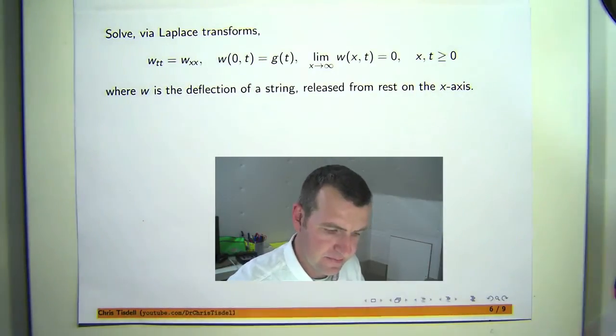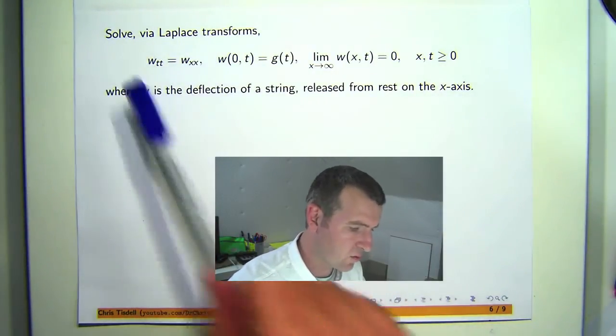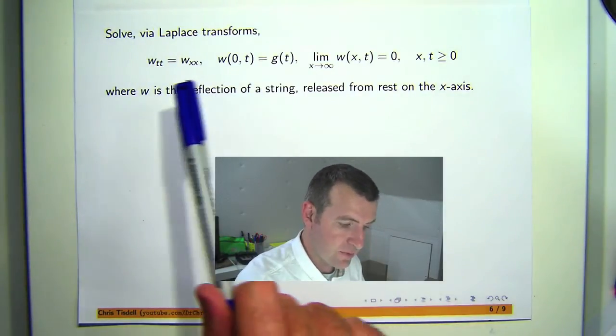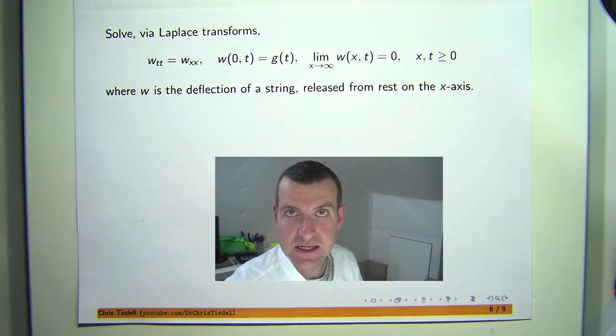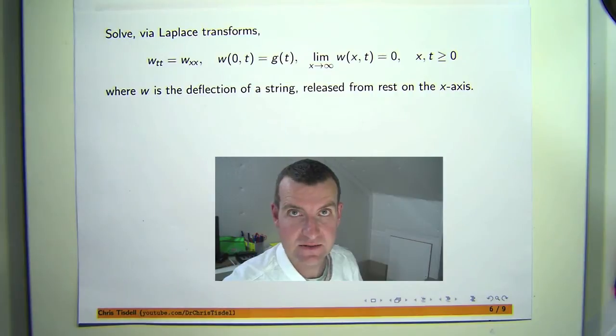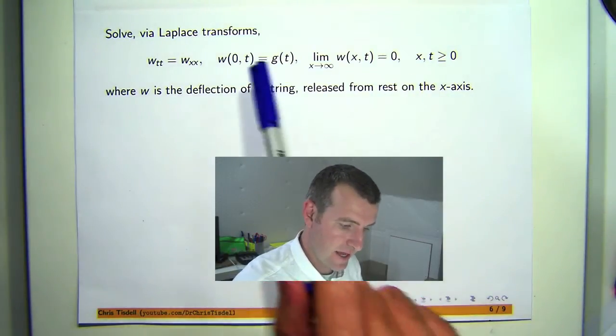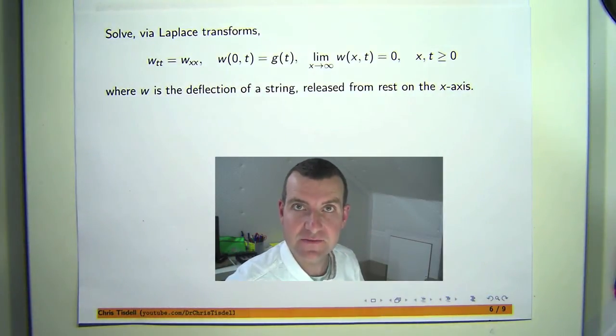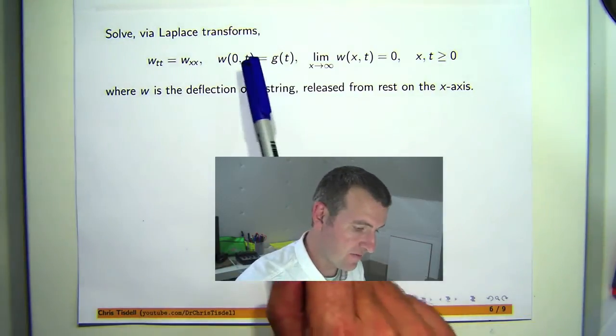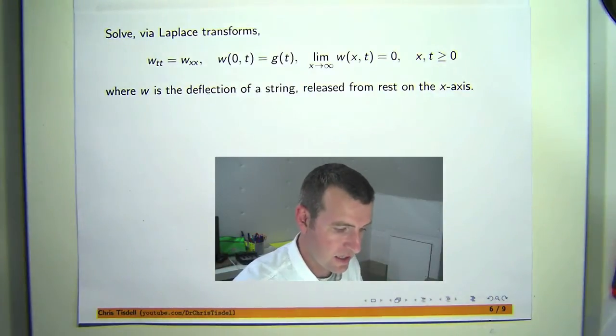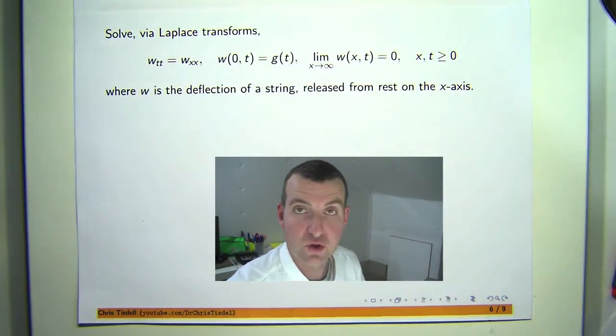In this exercise we've got a one-dimensional wave equation, where the subscripts mean partial derivatives. W depends on position x and time t, and w might represent, for example, the deflection of a string from its equilibrium position, which is the x-axis. This problem involves a semi-infinite string, where the end of the string is at x equals zero and the deflection is governed by some suitable function g.